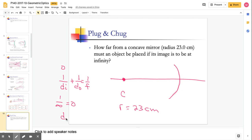then we know that d0 has to equal f. Right? So, what we've done by saying the image is at infinity, then this goes away. And now I can just set the denominators equal. And so, this would be our answer.